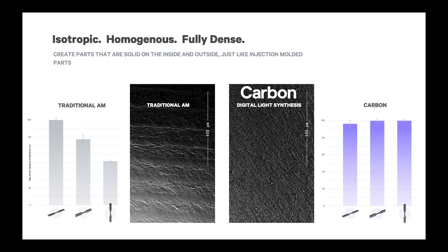The fact that DLS is continuous enables the second primary difference, which is print speed. DLS leverages the continuous build technology of our printers by using a software-driven print planner. It is literally a software-controlled chemical reaction that, combined with the printer design, gives us the ability to manipulate and optimize prints for speed and also for accuracy and precision.